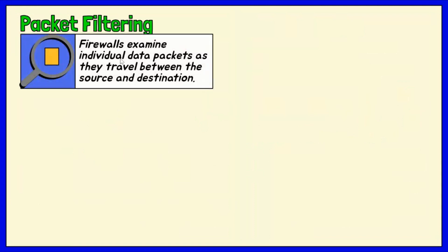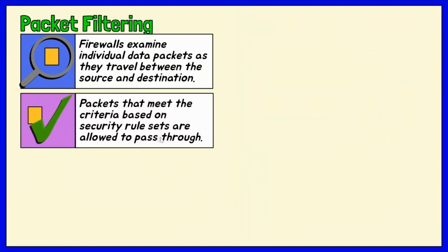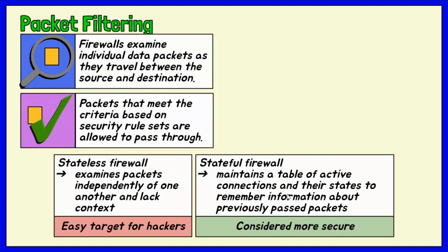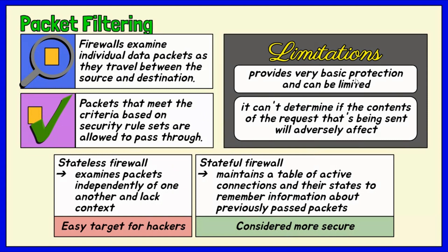Packet filtering firewalls examine individual data packets as they travel between source and destination. Packets that meet specified criteria based on established security rule sets are allowed to pass, while others are blocked. Packet filtering firewalls are divided into two categories: stateless and stateful. Stateless firewalls examine packets independently and lack context, making them easy targets for hackers. In contrast, stateful firewalls remember information about previously passed packets and are more secure, maintaining a table of active connections and their states for more informed decisions. While effective, packet filtering firewalls provide very basic protection and cannot determine if the contents of a request will adversely affect the application it's reaching.